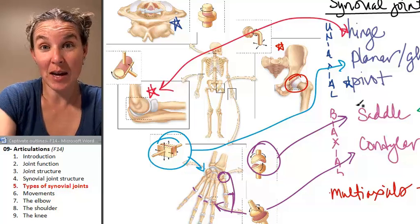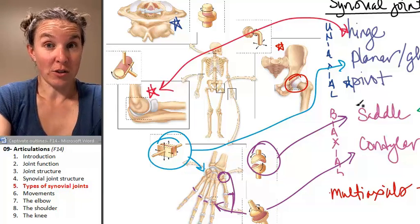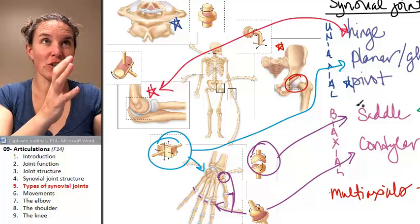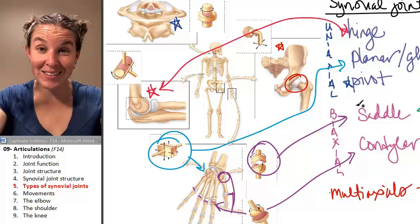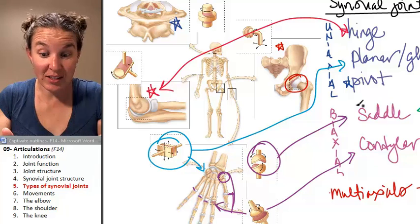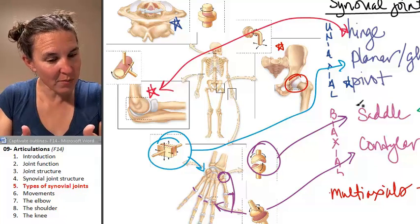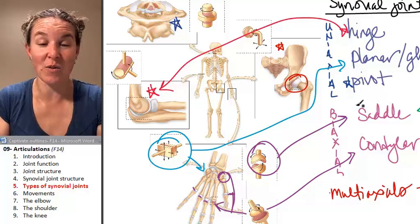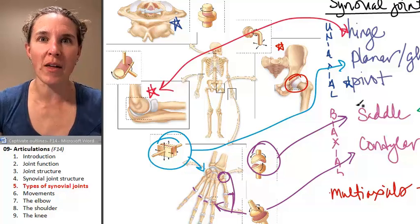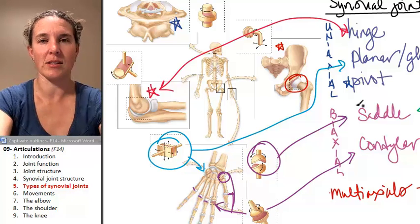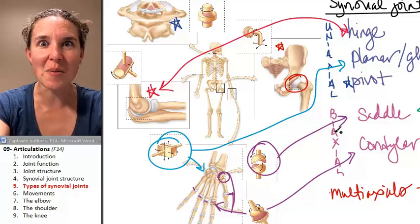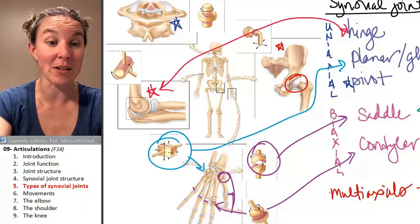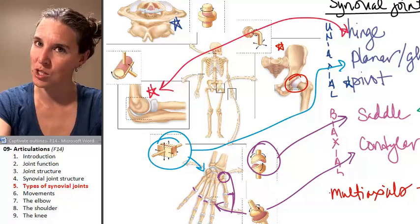But those are our types of synovial joints. Synovial joints are one classification of structure. And there are six classifications of structure. Beneath them there are six types of synovial joints. And all of them are diarthrosis. Shall we talk about movements that can happen at synovial joints? You know we should.